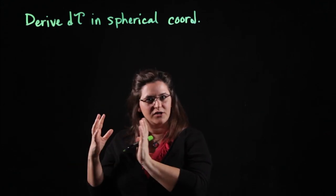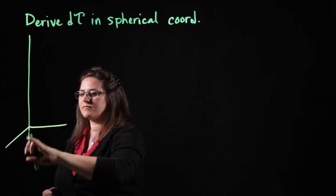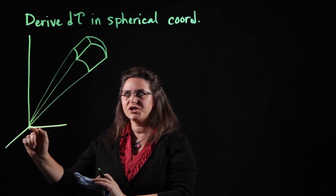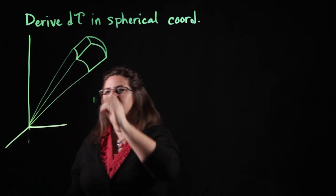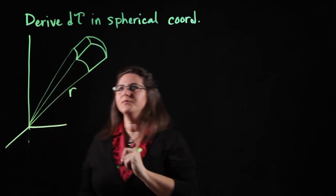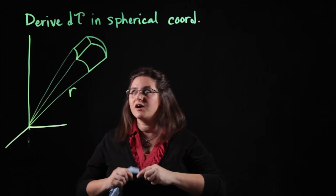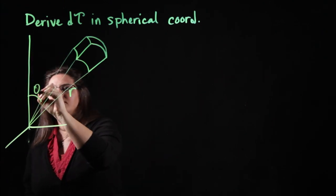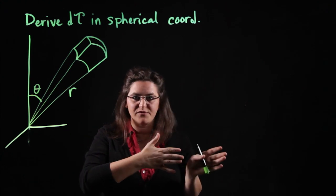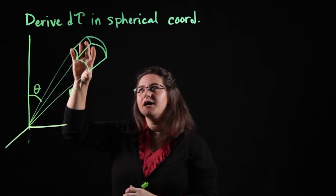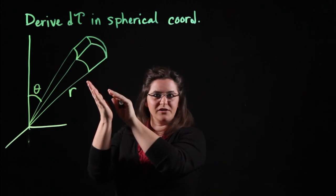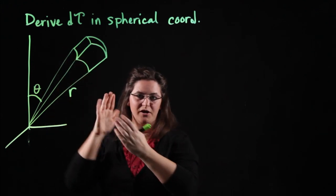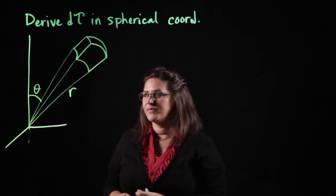Let's draw our tiny box in spherical coordinates. The distance from the origin to the location of the box is r. In spherical coordinates, remember that theta comes down from the polar axis, it comes down from the z-axis. So theta is measured here, and phi is measured counterclockwise from the x-axis. I've made this tiny amount of sphere by going out a little bit in the radial direction, down a little bit in the polar direction theta, and into or through towards or away from the board in the phi direction.